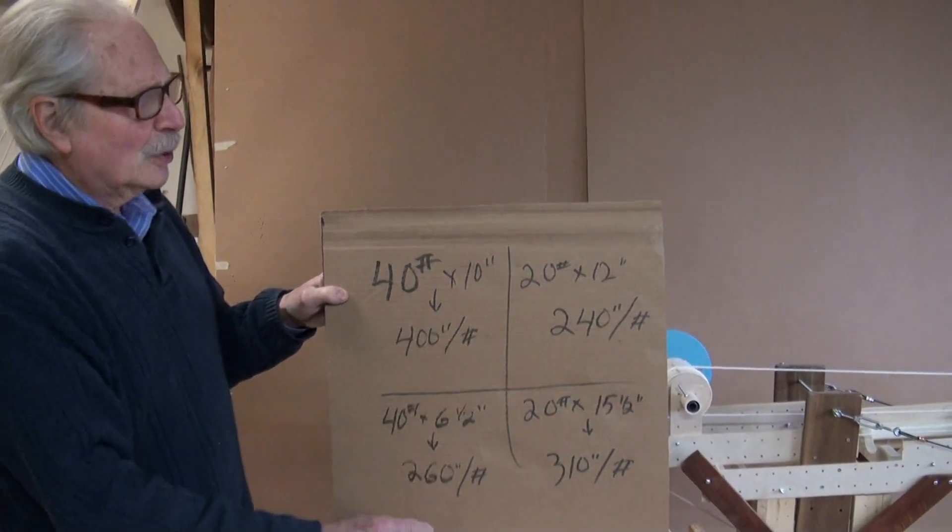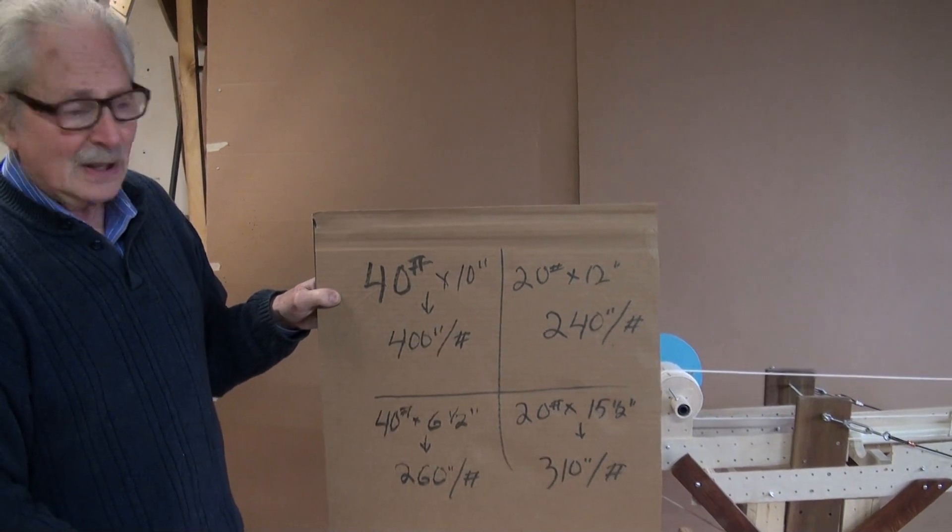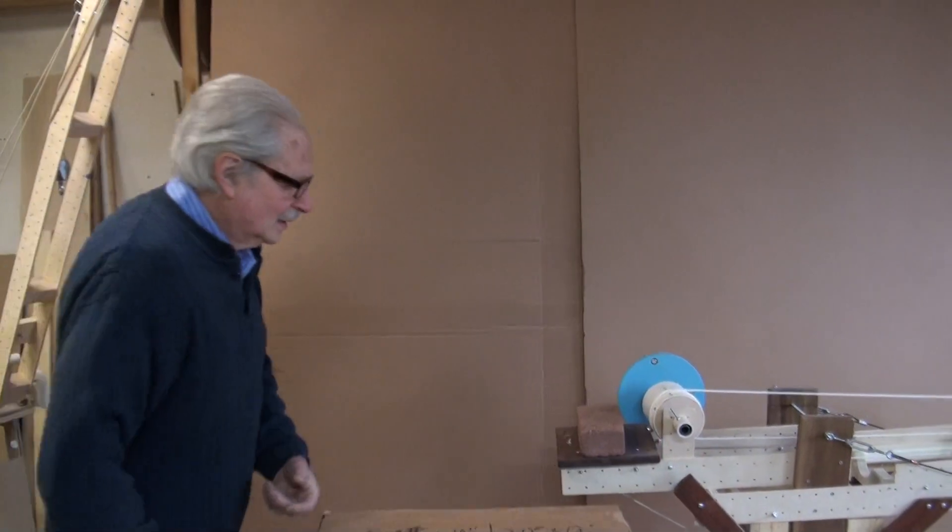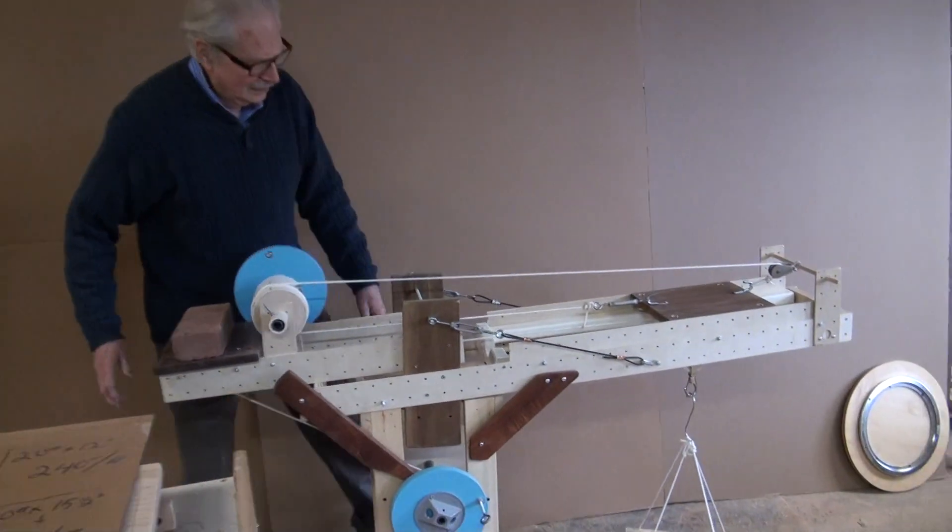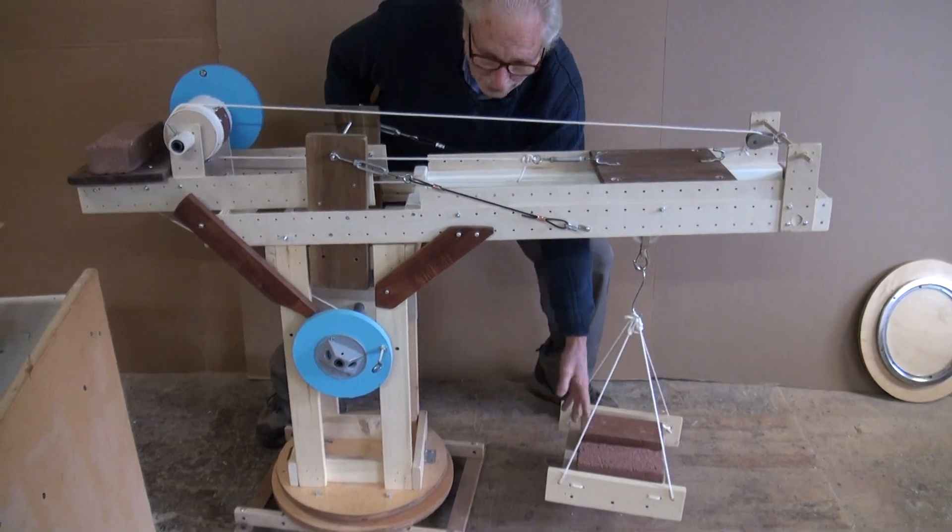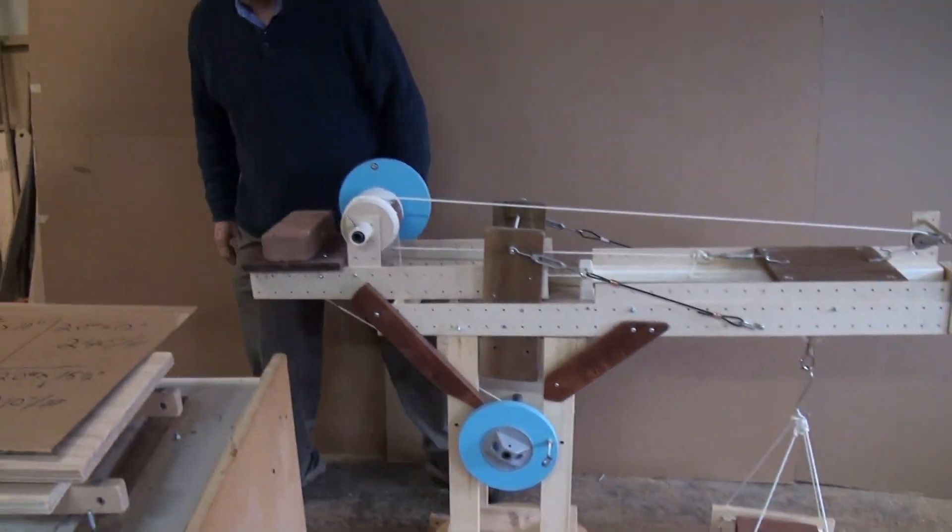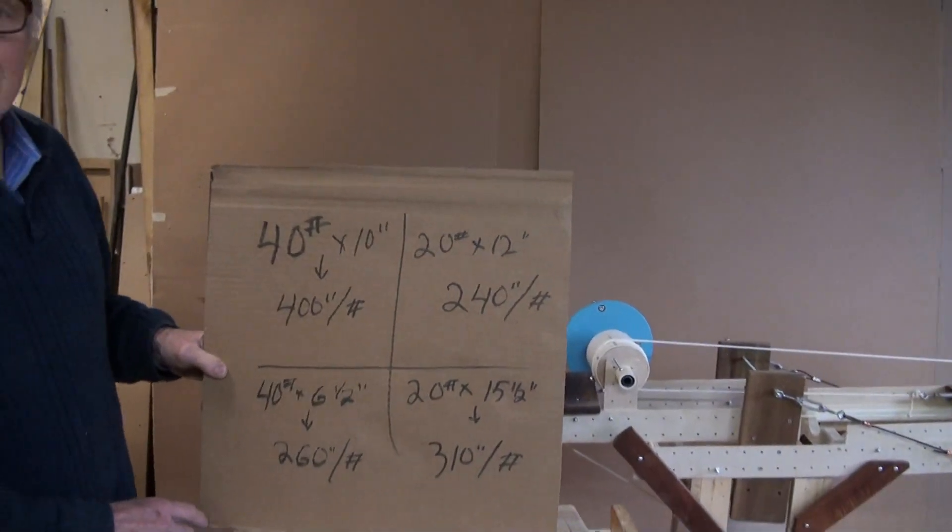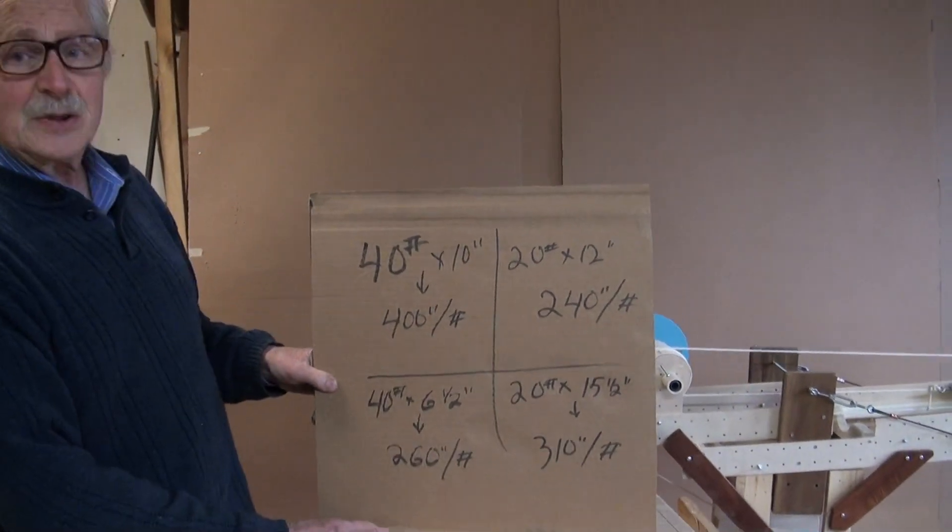Now the load and the boom weigh 20 pounds. And the distance from the center of gravity of the load here to the pivot point is 12 inches. Weight times distance, you get 240 inch pounds.